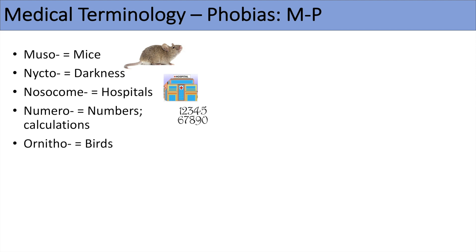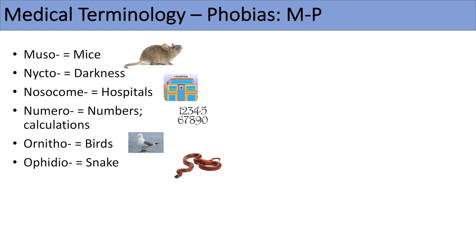The next one is ornitho, which means birds. So ornithophobia would be a fear of birds. You can think of the word ornithologist, a specialist with regards to birds. The next one is ophidio, which means snake. So ophidiophobia would be a fear of snakes. This is a very common phobia.